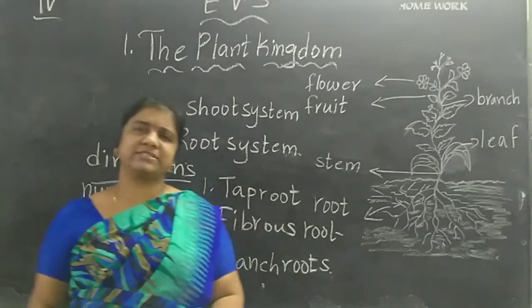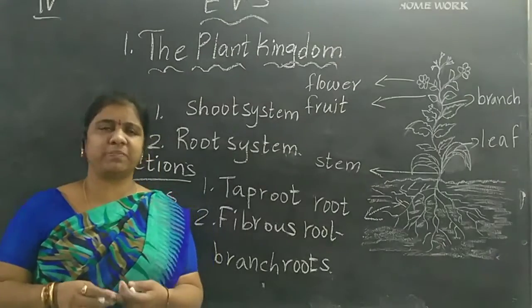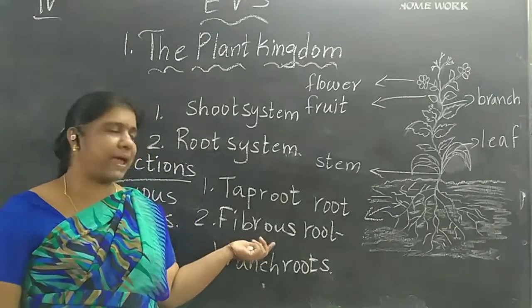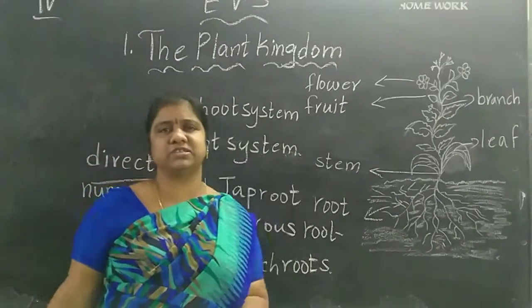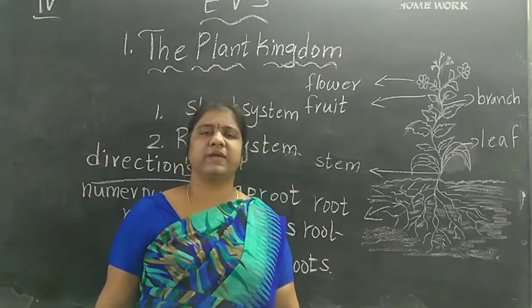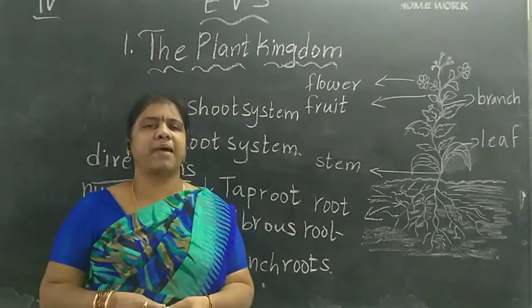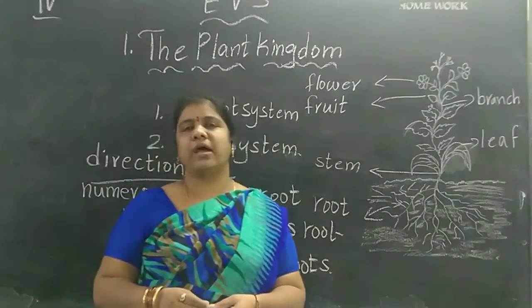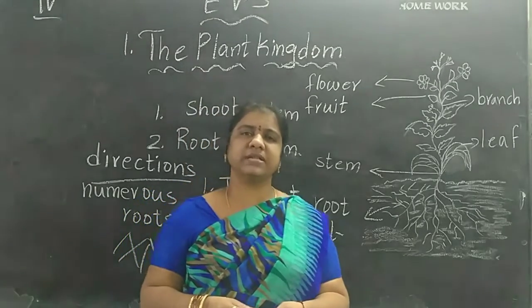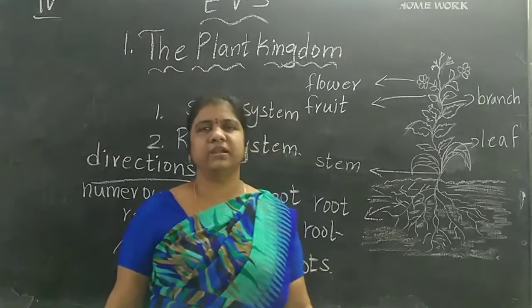Examples of fibrous root include grass, marigold, onion, rice, and others. These plants grow roots in different directions. These are the examples of fibrous root. Thank you children.